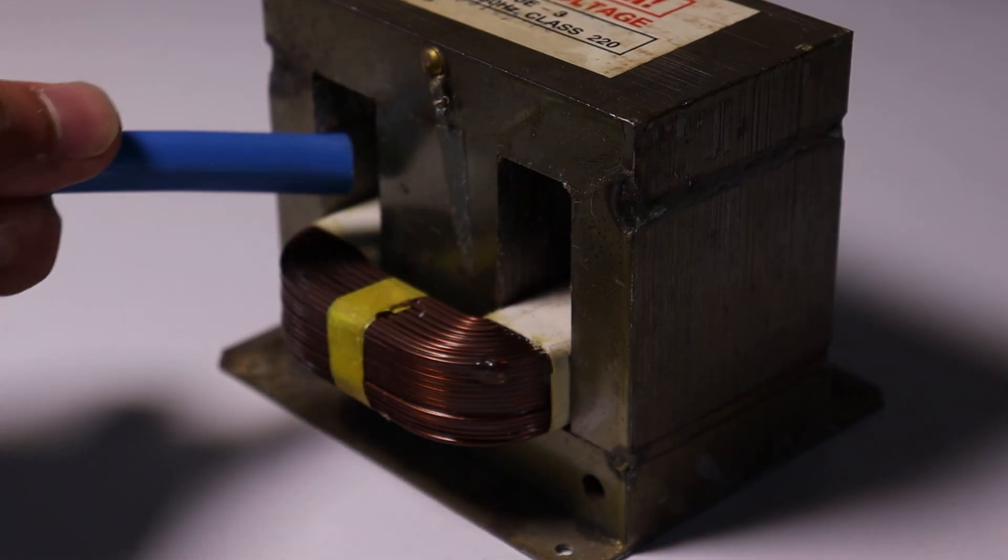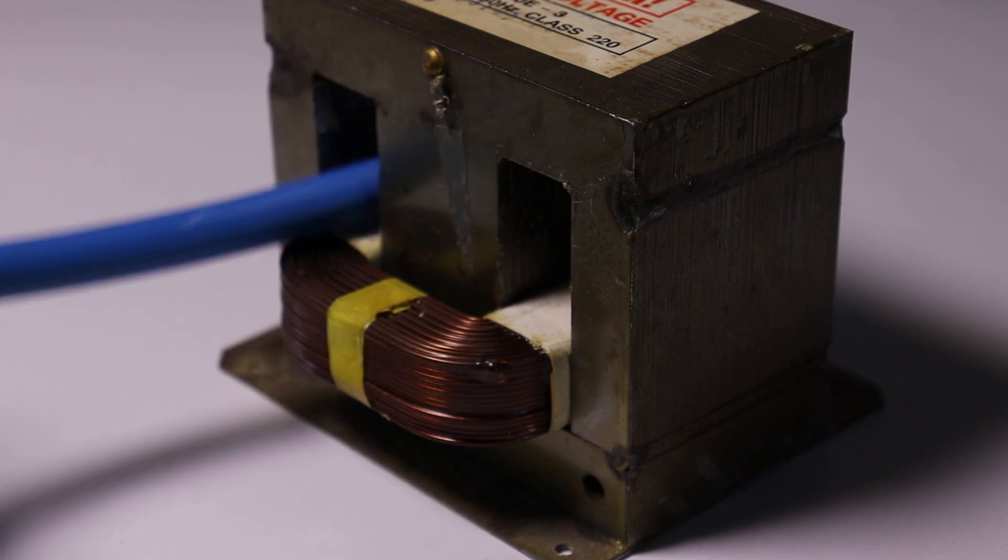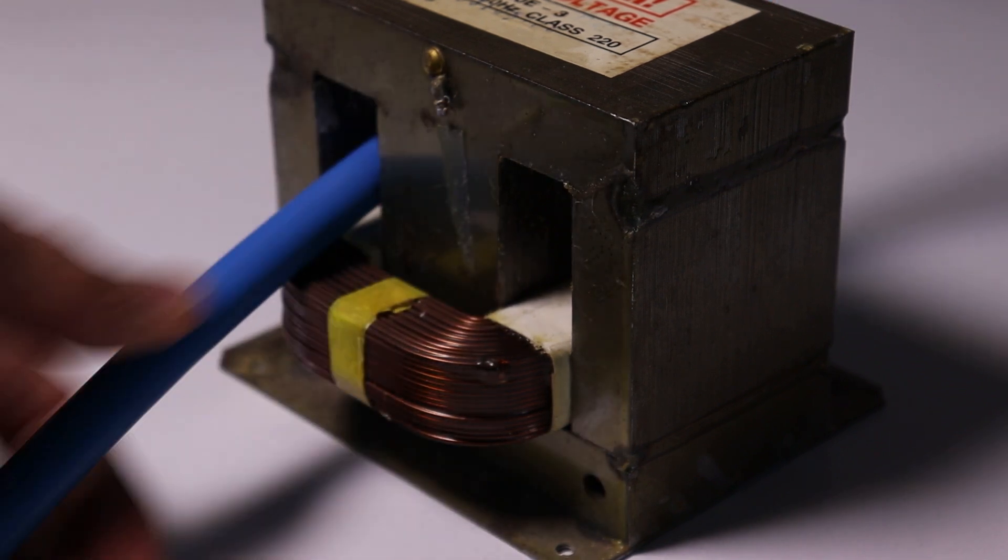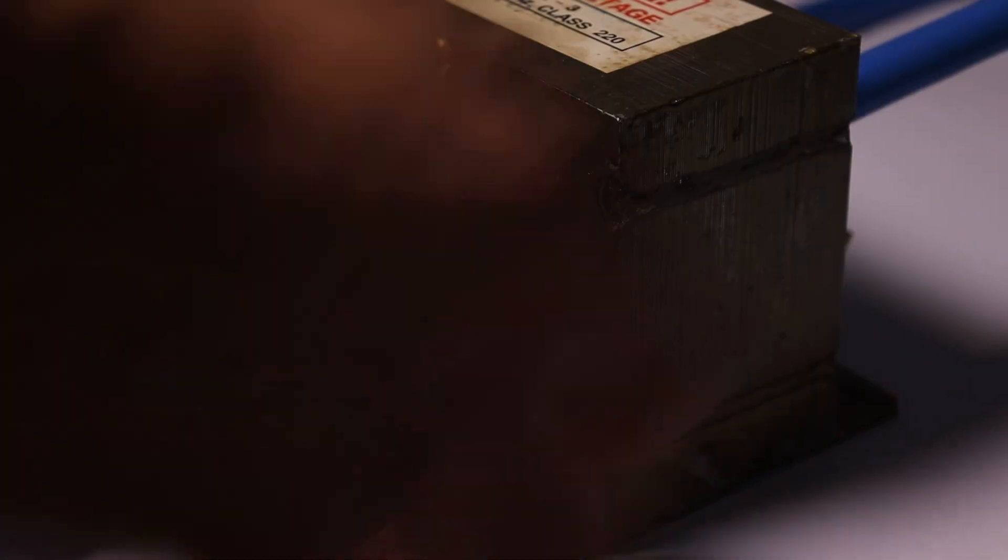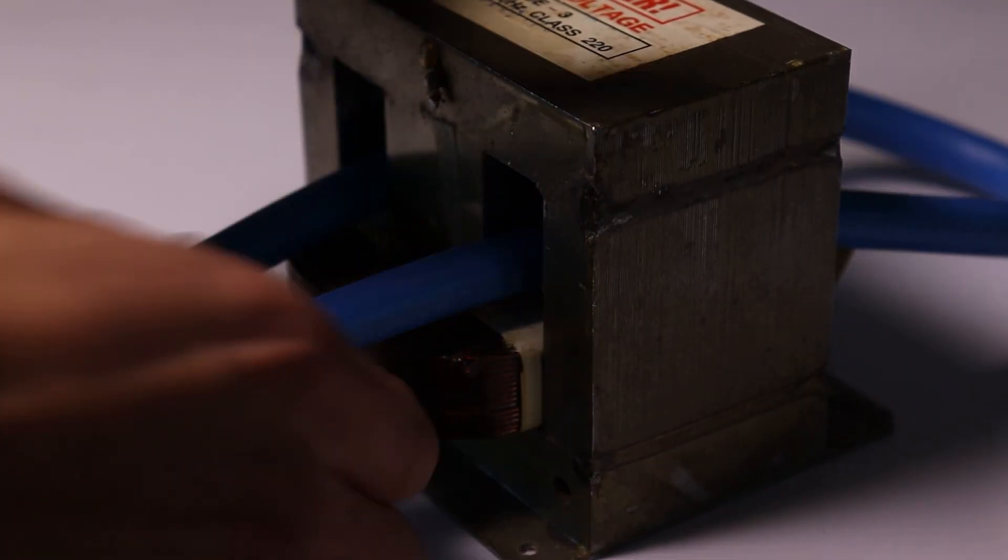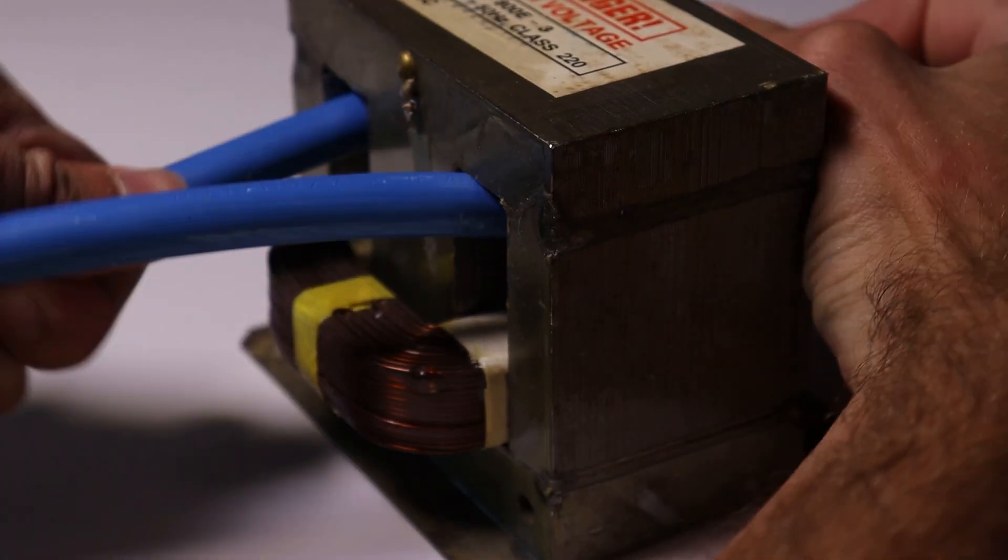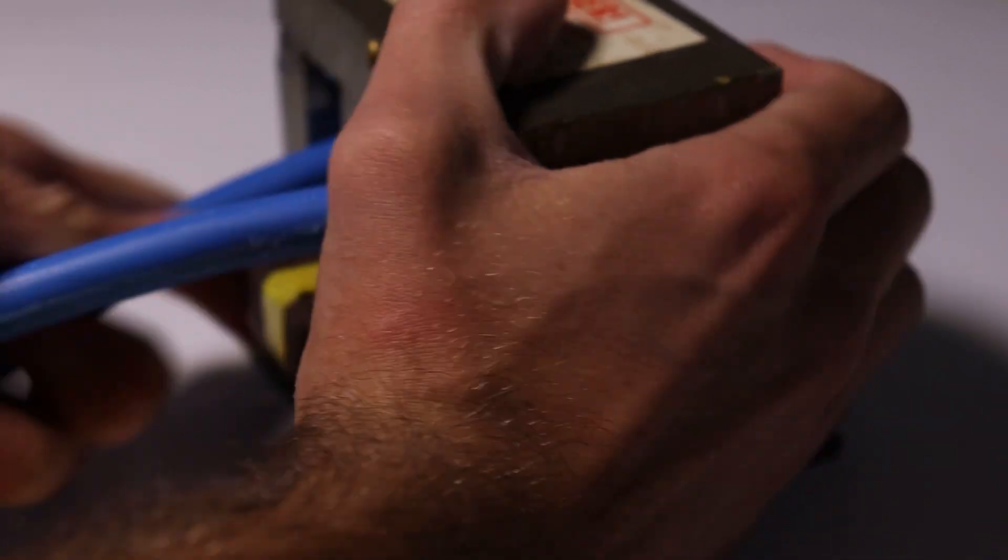With the secondary removed, it was time to insert the fresh new wire which has the same dimensions as the wire in the first transformer. It is very important to insert the wire in the same direction as the first transformer, so when they get connected in series, they won't be out of phase, which may result in zero voltage at the output or strange behavior of the transformer.